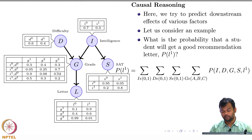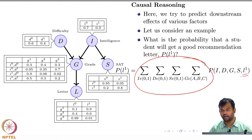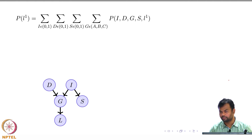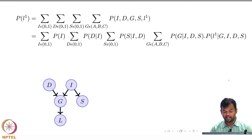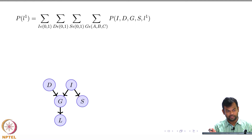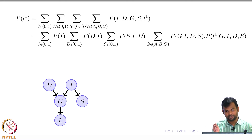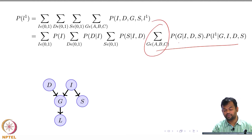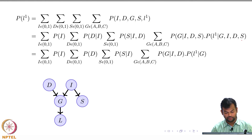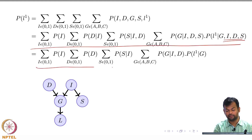This is how you compute P(L1)—you marginalize over all the other variables and just keep the value of L as high. What we have are the factors, so this factorizes as various factors and now what I have done is just pushed the summations, adjusting them so that variables which are not important are handled efficiently.